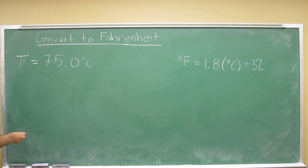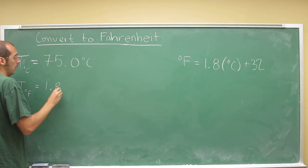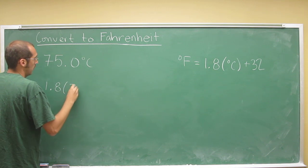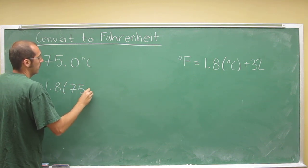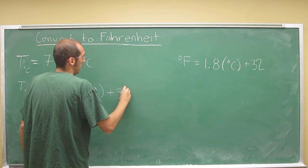Let's do this. We got this temperature in degrees Celsius, so we want to find the temperature in degrees Fahrenheit. All we've got to do is use that formula: 1.8 times 75.0 plus 32.